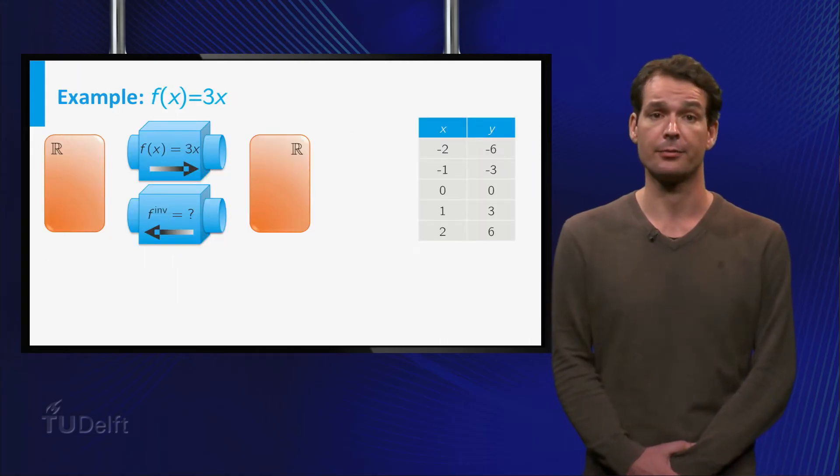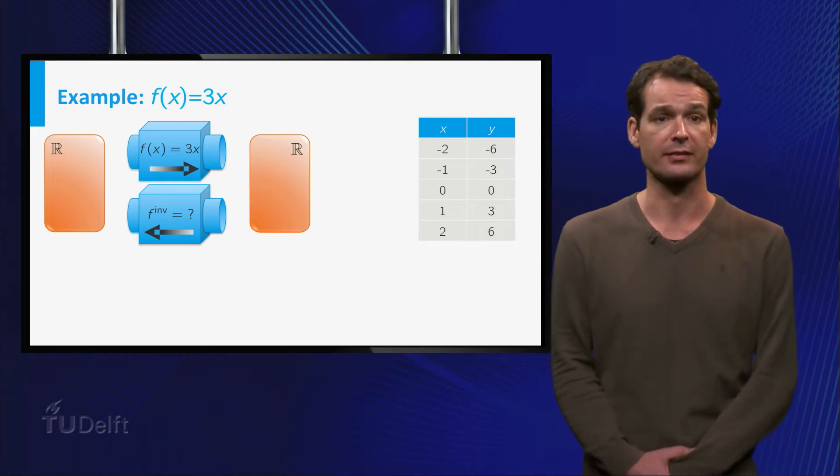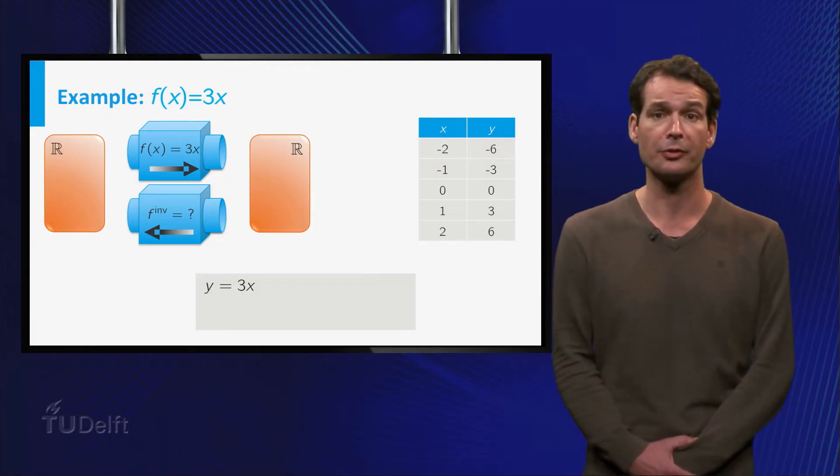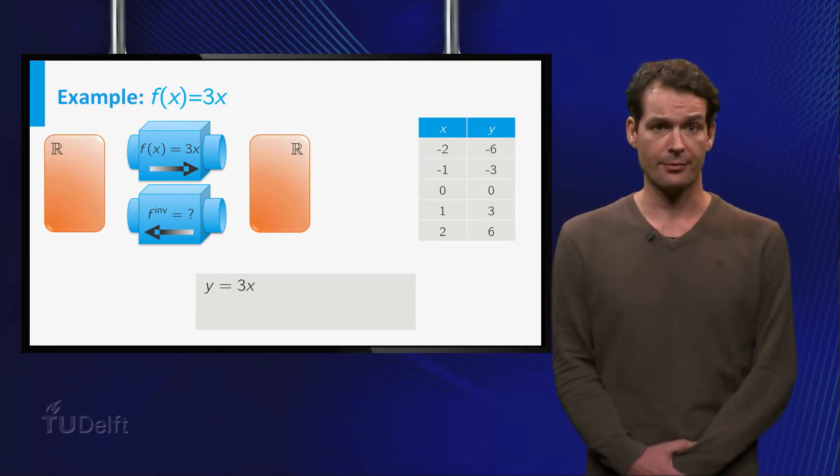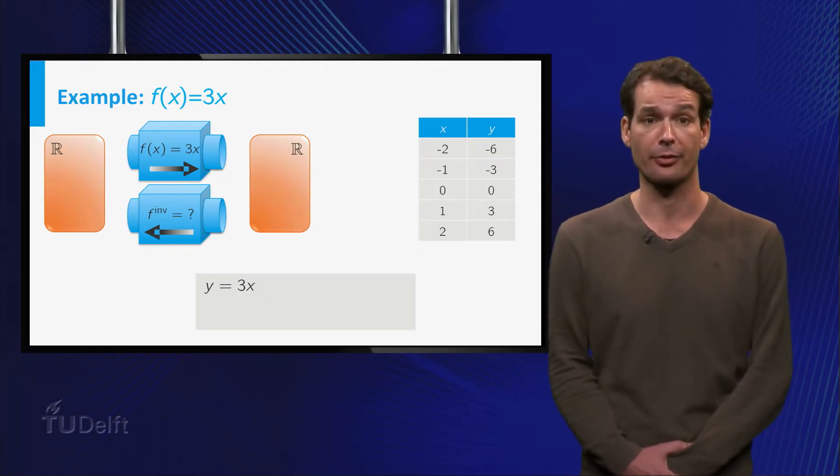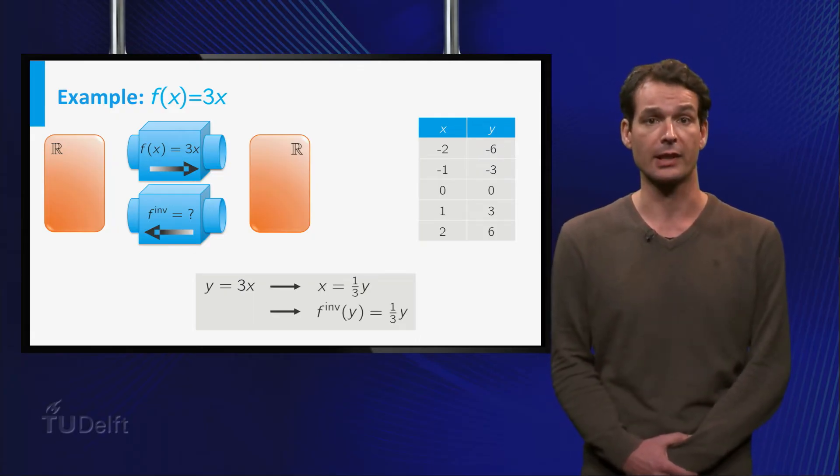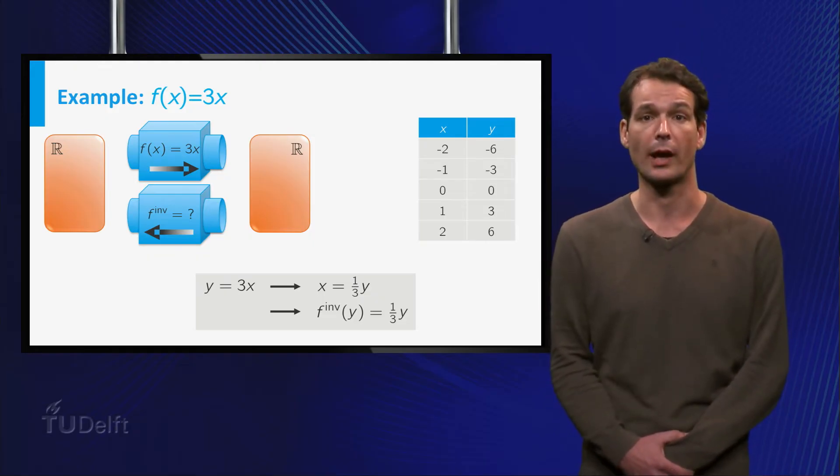How can you find the inverse function? For example, take F of X is equal to 3X. The domain and range both consist of all real numbers. We start by setting Y equal to 3X. Now the inverse function maps Y back to X, that is, F inverse of Y is equal to X. If we solve the equation Y equals 3X for X, we get X equals 1 over 3 times Y, so we see that F inverse of Y is equal to 1 over 3 times Y.